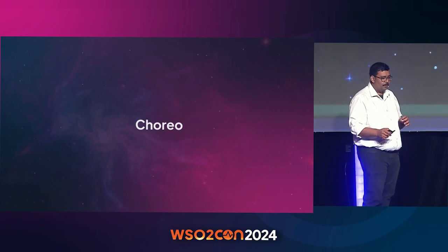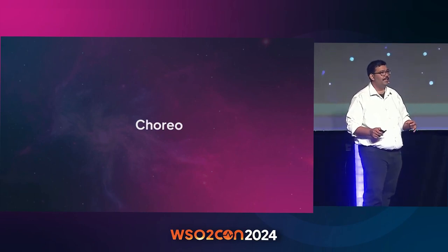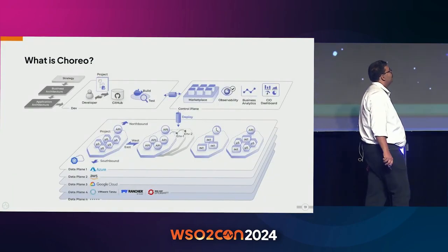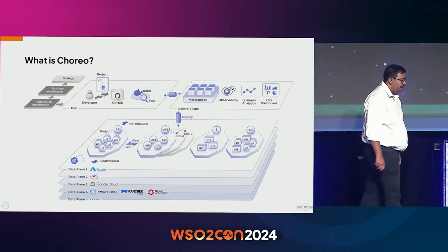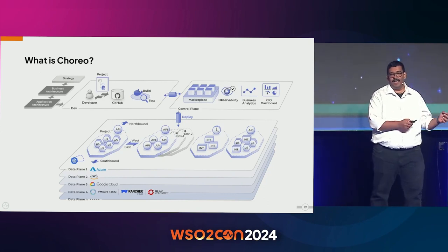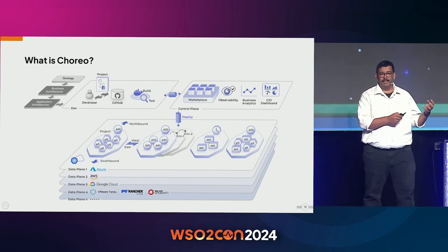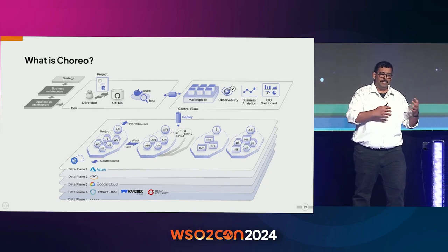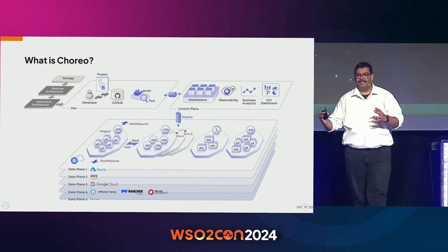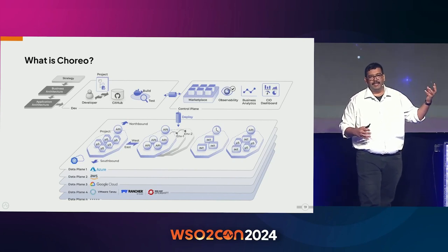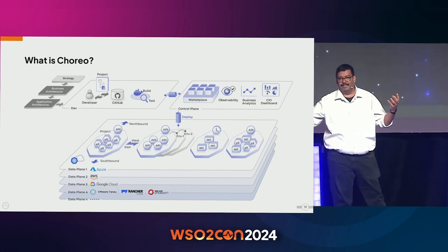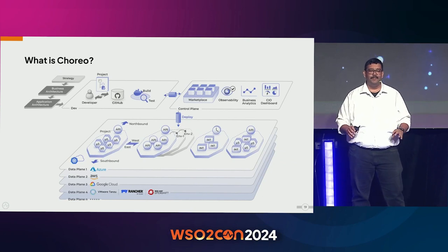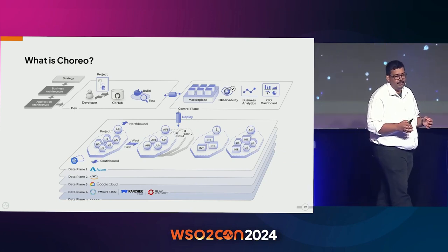Let's briefly talk about Choreo and how some of its features have been influenced by these thoughts. Choreo is our internal developer platform, which lets you build applications without worrying about the underlying platform. It takes away all the burden from developers, automating pipelines to the level where developers just write code and it appears in production. All the messy integrations are handled by the platform — it handles all the builds, deployments, and testing.